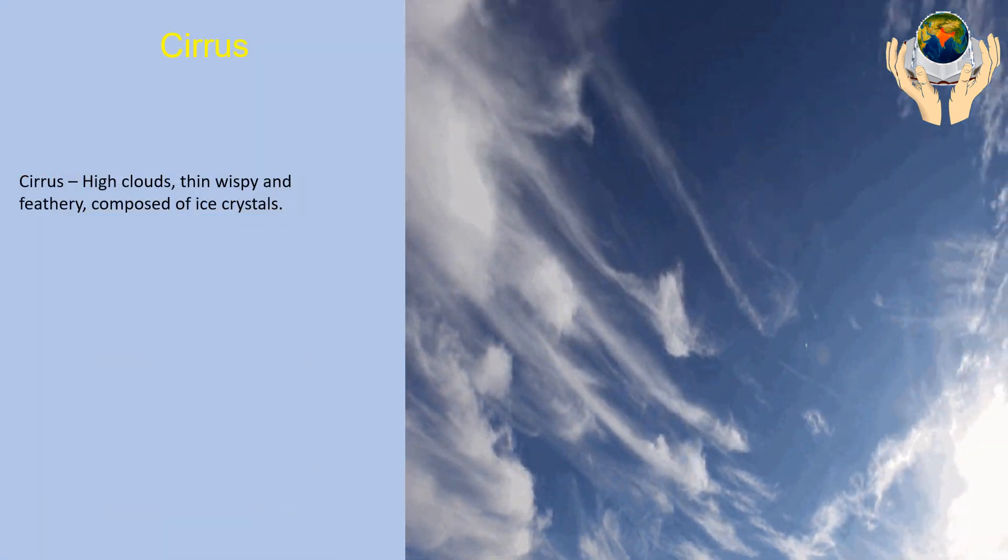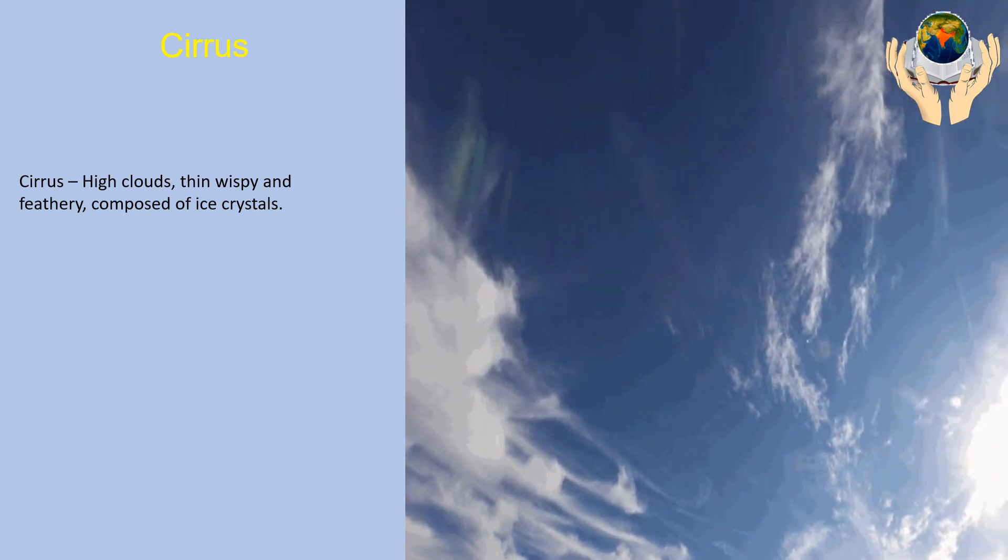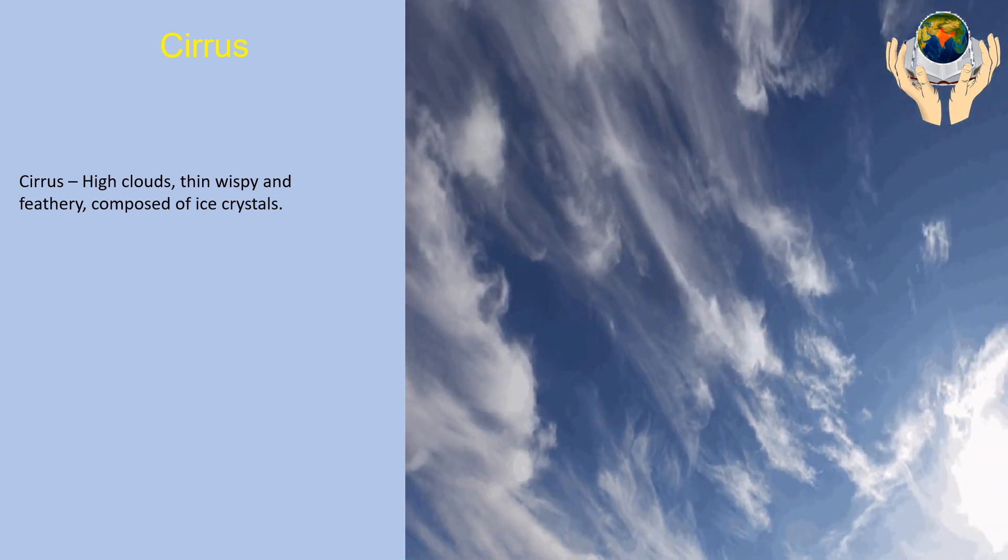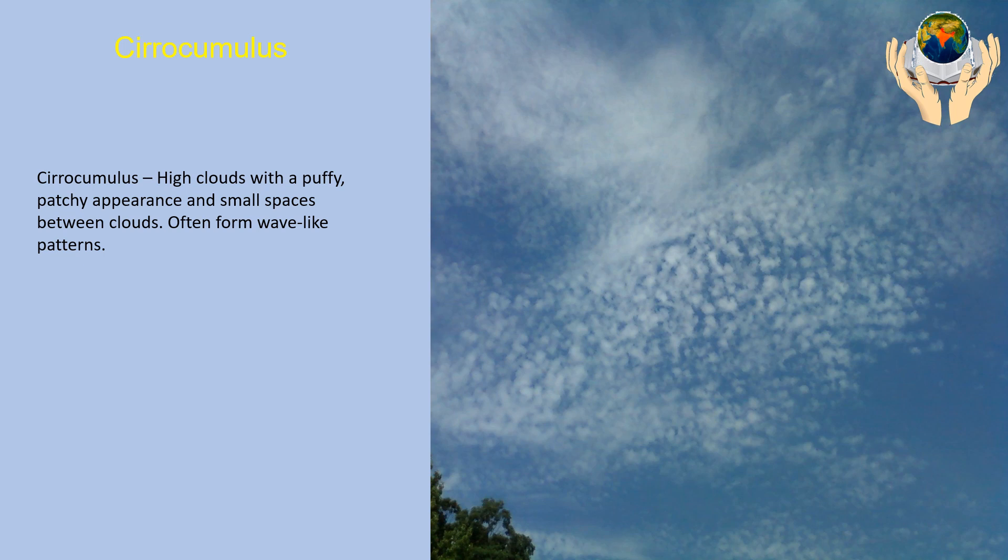Cirrocumulus. Cirrocumulus is the high clouds with a puffy, patched appearance and small spaces between clouds, often forming wave-like patterns.